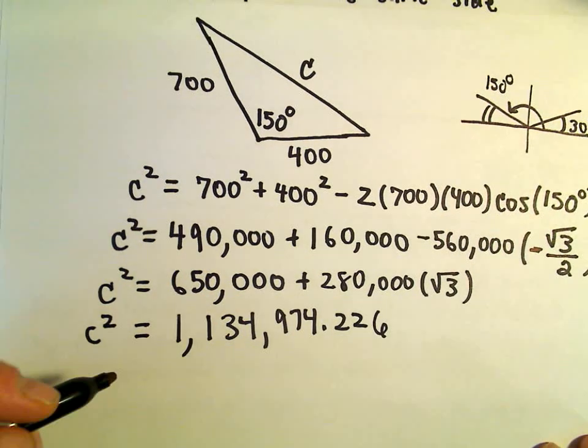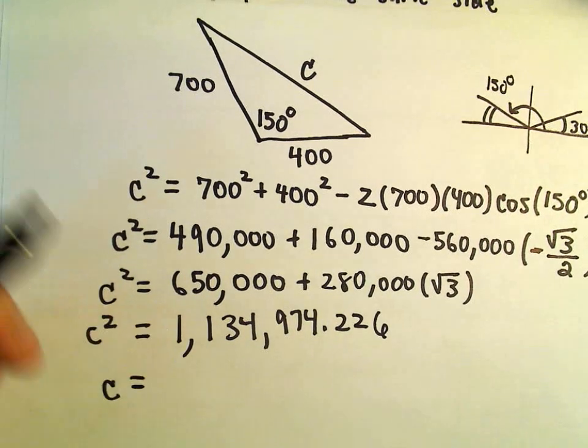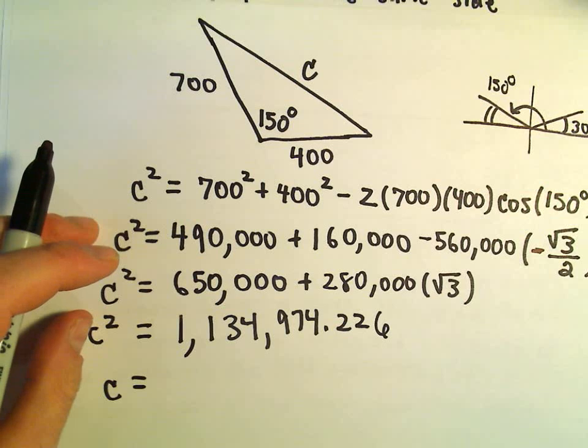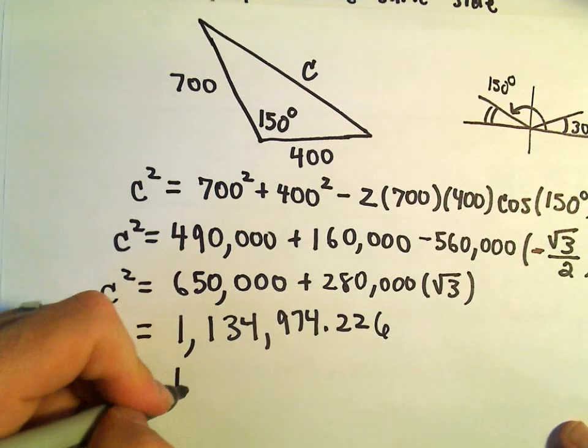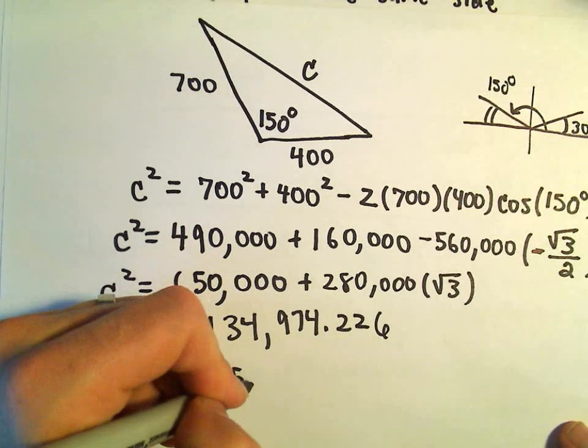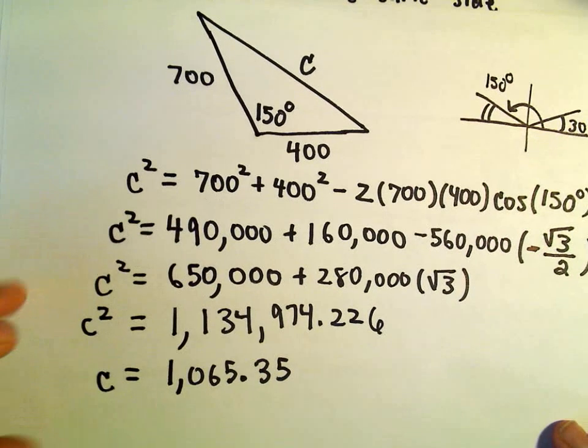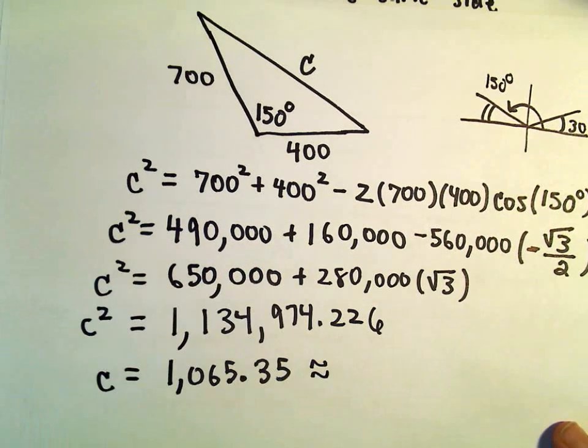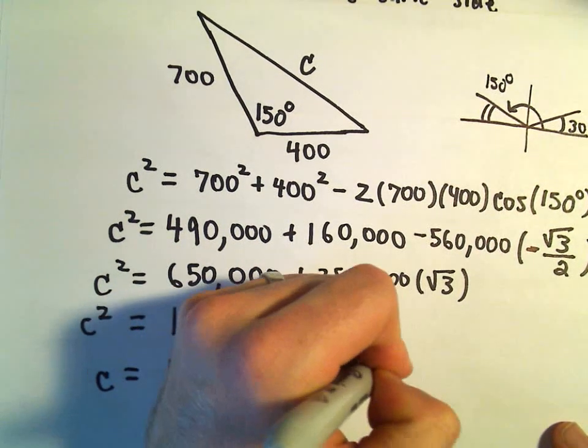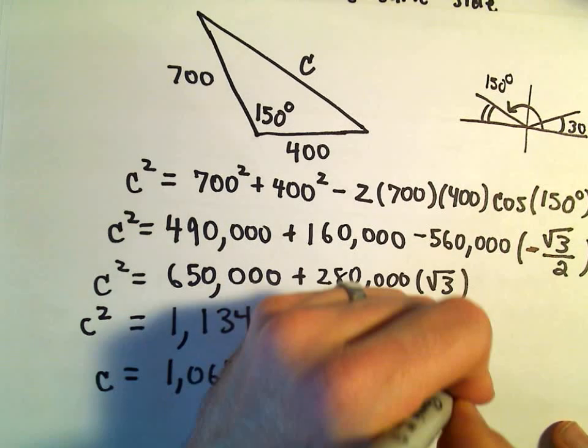Well, the last thing we'll have to do is just take the square root of this number. If we take the square root of all this, I'm getting this to be 1065.35 after rounding. I'm going to round that down even a little bit more and just say it's 1065.